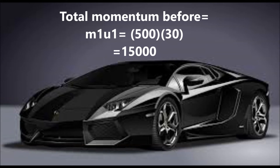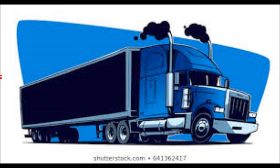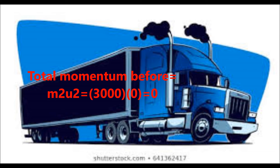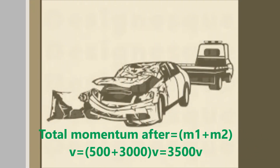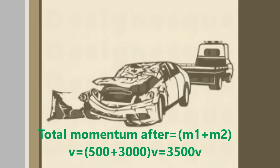Total momentum before: for the first object, which is the car, m1 is 500 kg, u1 is 30 m per second. The second object, the lorry, m2 is 3,000 kg, u2 is zero because it is at rest.